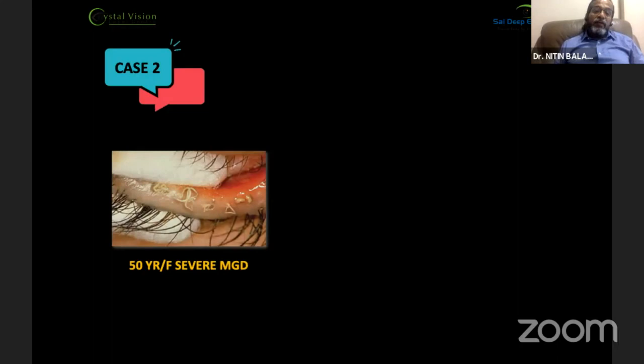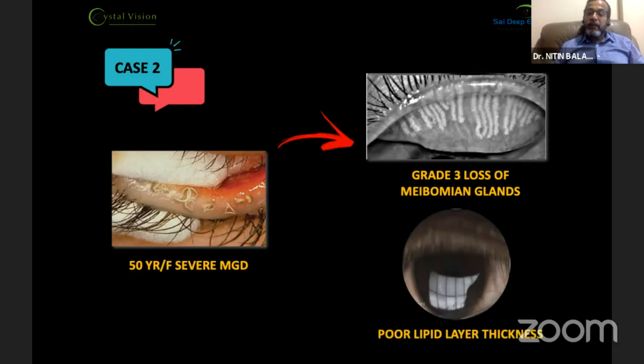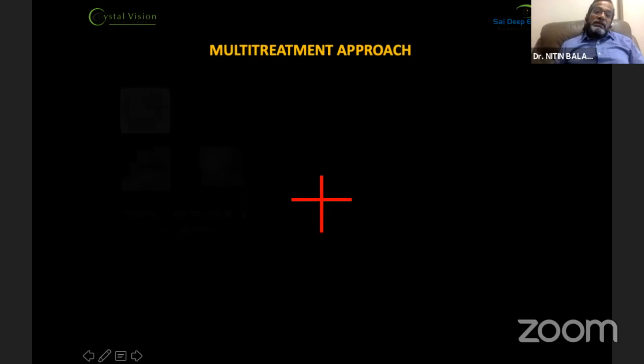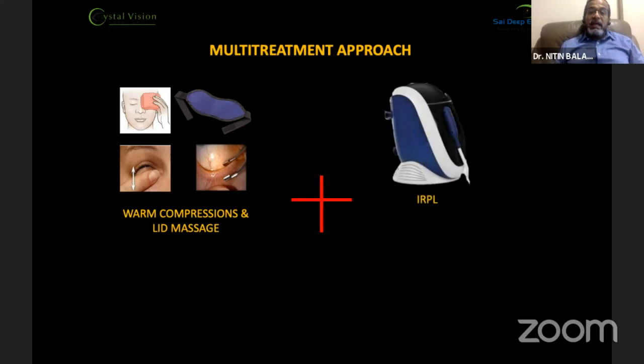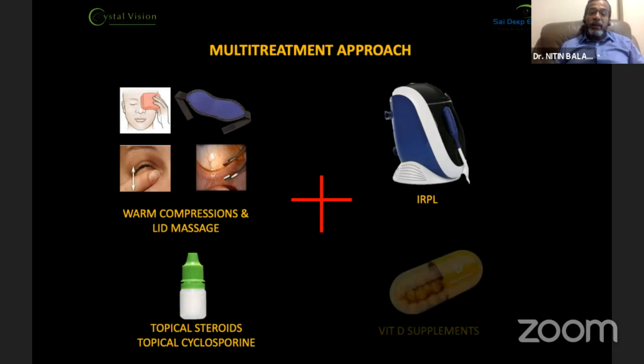In cases of severe MGD with grade 3 loss of meibomian glands and a very poor lipid layer, a multi-treatment approach is warranted. This includes lid compressions, lid massage, combination with IRPL, and addition of topical steroids, topical cyclosporine, and vitamin D supplements to achieve a good result.